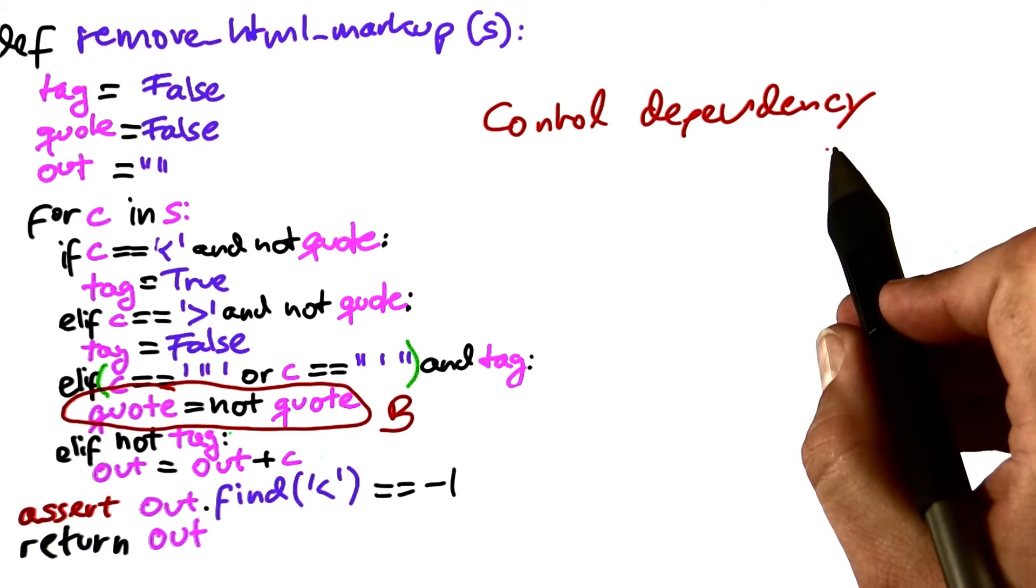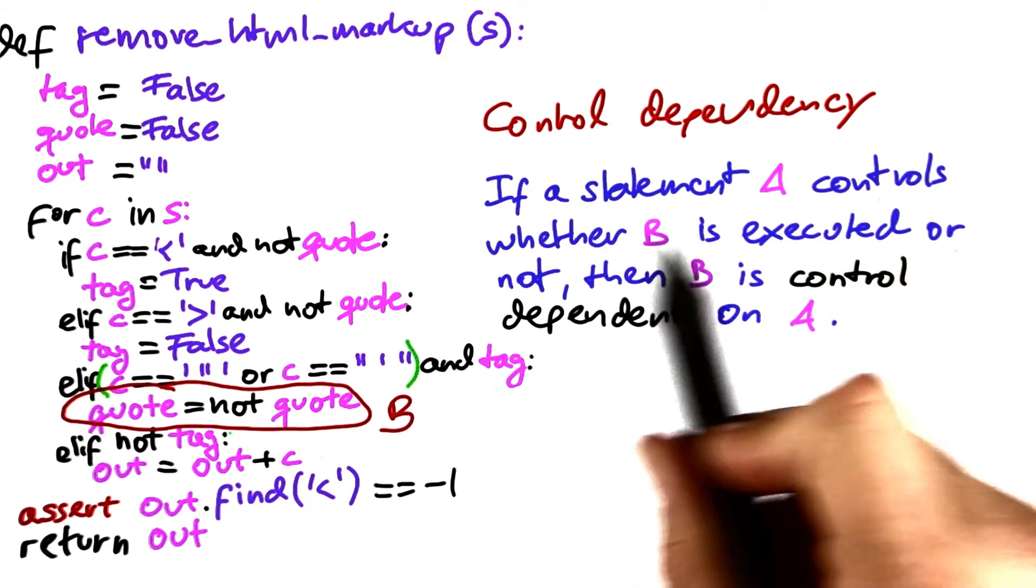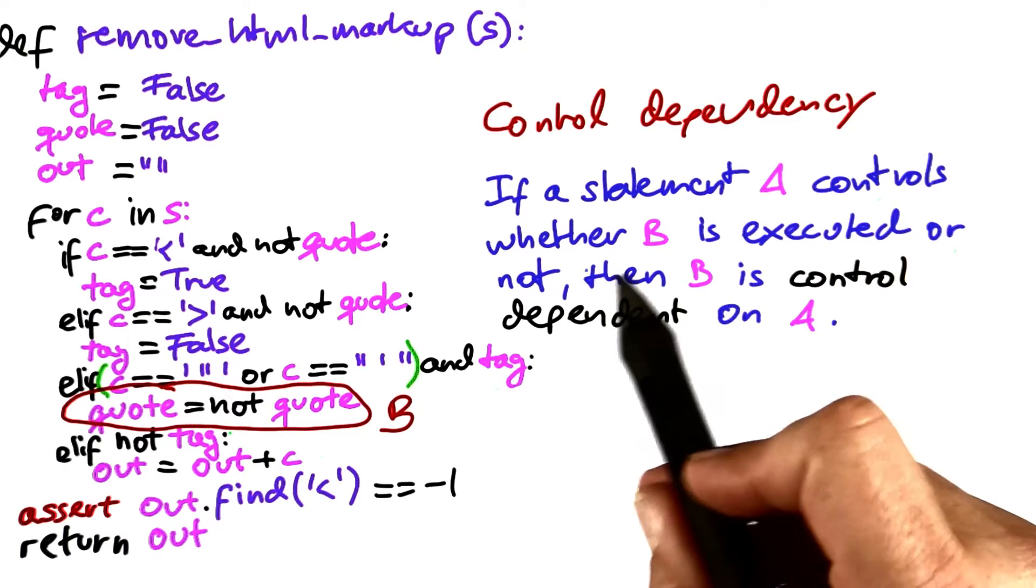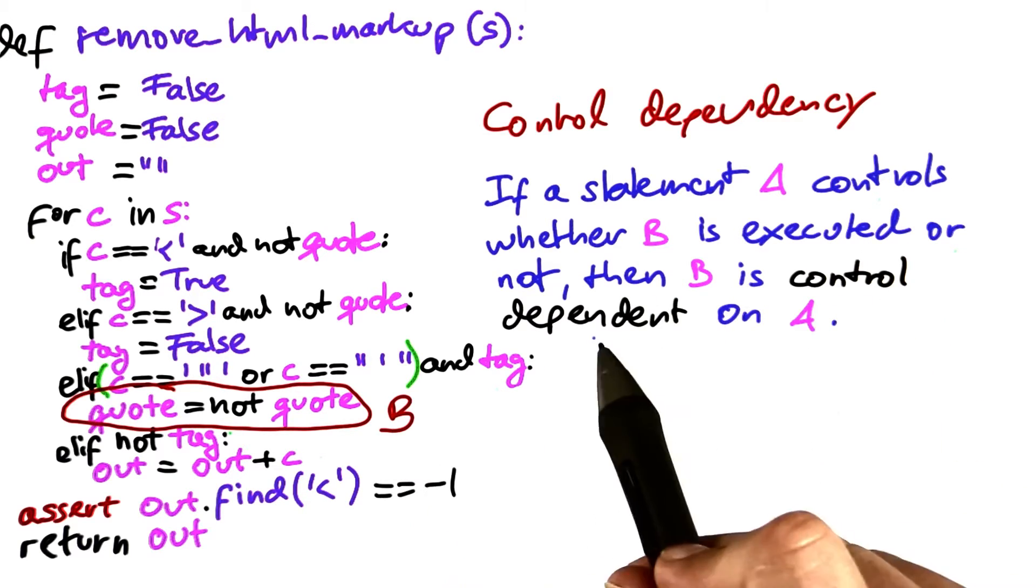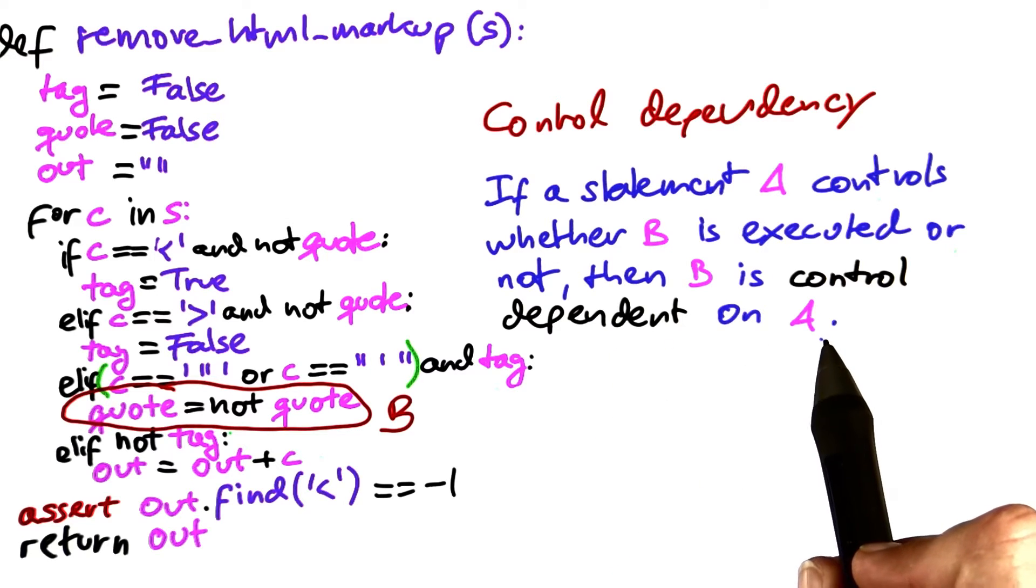This is the concept of control dependency. If there is some statement which controls whether the statement b is executed or not, then b is said being control dependent on that very statement.